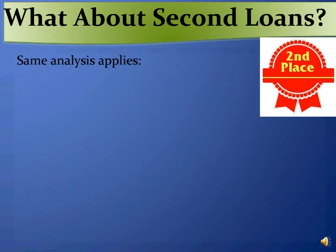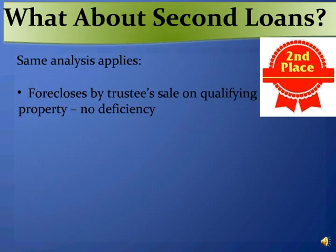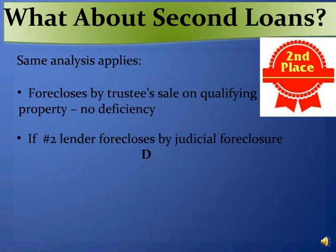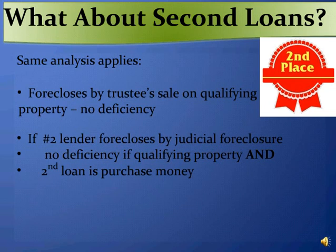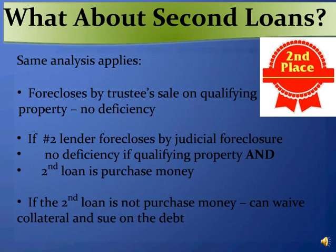So what about second loans? Basically, the same analysis applies. If the second lender forecloses by trustee sale and the property is qualifying property, then the foreclosing lender may not pursue a deficiency. If the second lender forecloses by judicial foreclosure, then it must be qualifying property and a purchase money loan in order for the borrower to be protected. If it's not qualifying property or the loan is not purchase money, then the foreclosing lender may waive the collateral and simply sue on the debt.